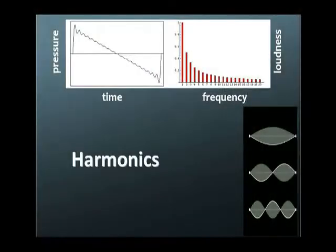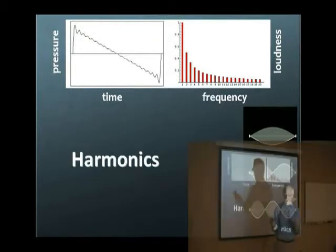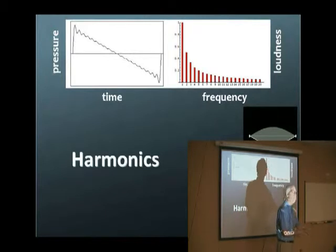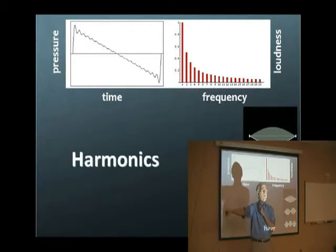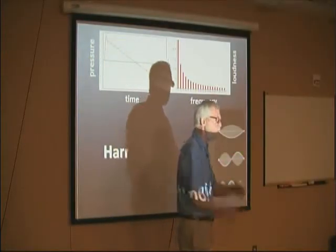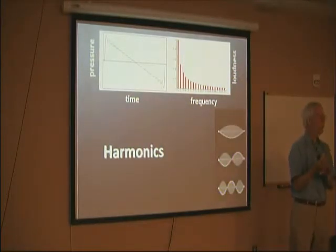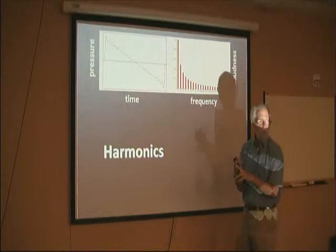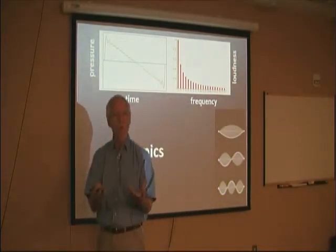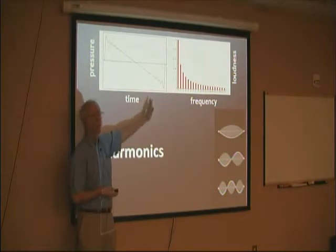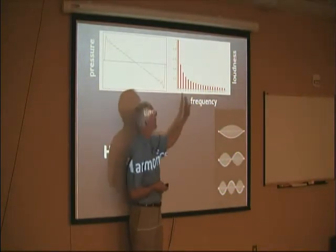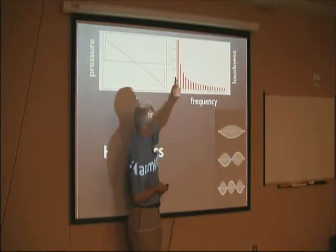Imagine an orchestra tuning up. The first violinist has walked over to the piano and played middle A — 440 hertz, 440 cycles per second — and now the whole orchestra's tuning up. With your eyes closed, they're all playing exactly the same note, and yet you can hear the violin, the French horn, the oboe, the trombone, the trumpet. Everybody's playing exactly the same note and you can hear the individual instruments. The answer is in the harmonics — the overtones of the oscillations of the instrument.